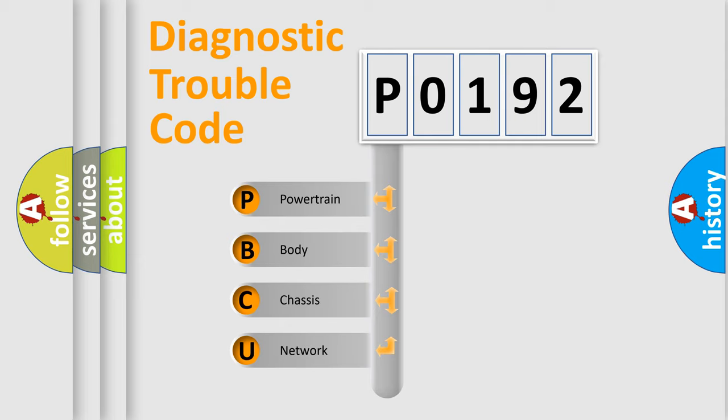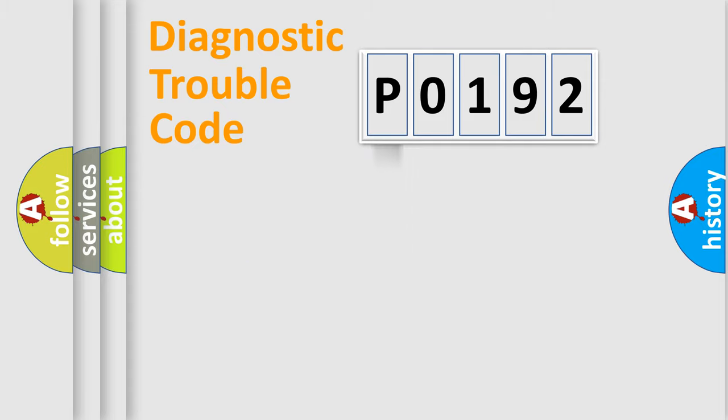We divide the electric system of automobile into four basic units: powertrain, body, chassis, and network. This distribution is defined in the first character code.